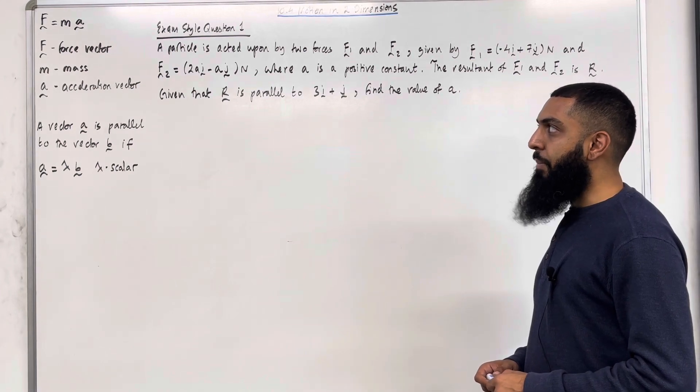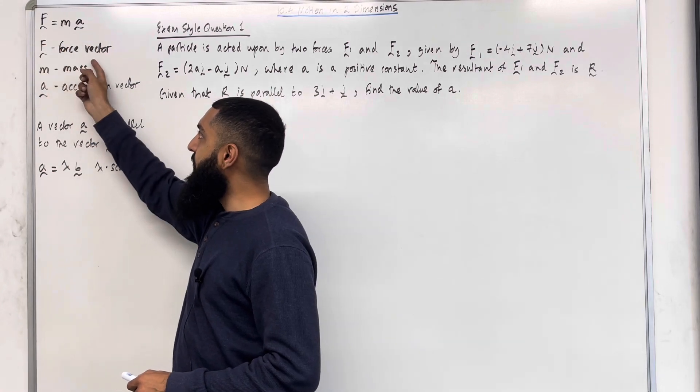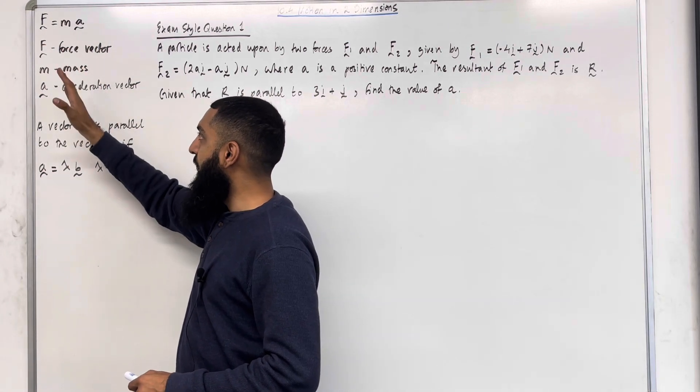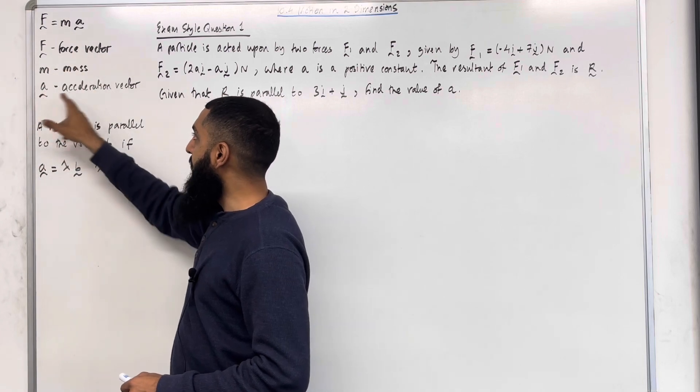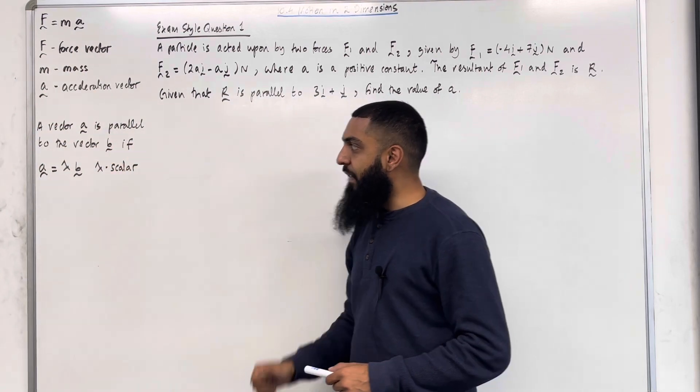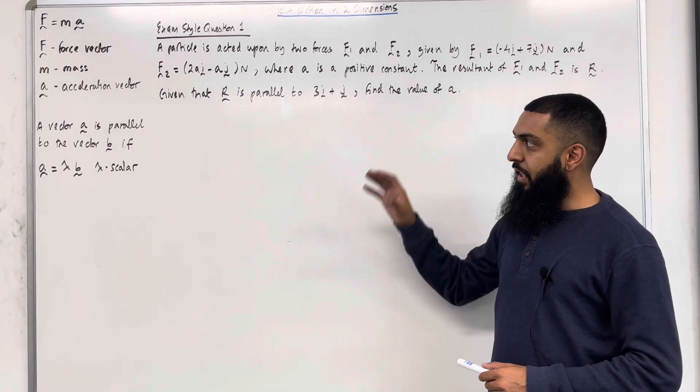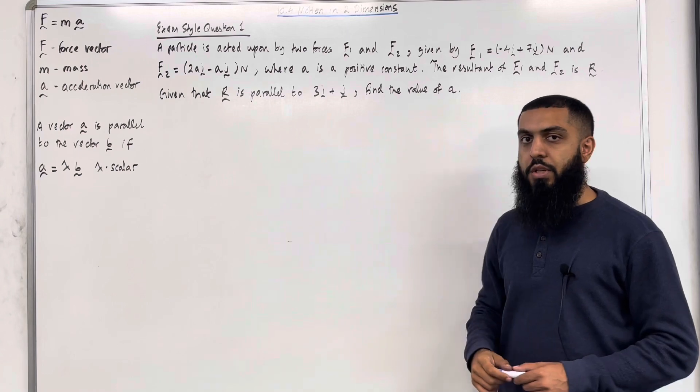F equals M A. This is Newton's second law represented in vector form. F is your force vector, M is your mass which is a scalar, and A is your acceleration vector. A vector A is parallel to the vector B if A equals lambda lots of B, where lambda is a scalar. These are the key facts of 10.4 motion in two dimensions.